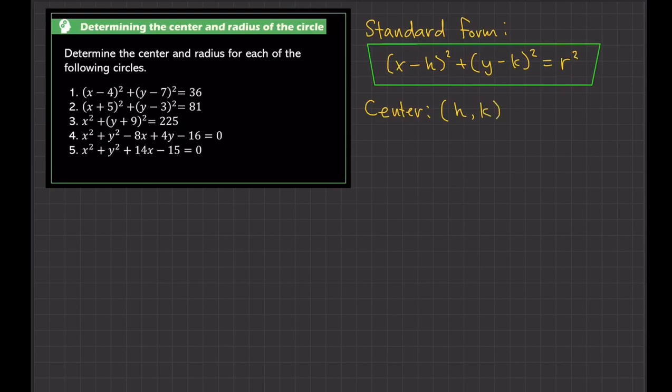So where are we going to find h and k? h is here and k is here. It's important that the signs are all negative. If it's not negative, then we will make it negative. So that's your center — it's already there. Now for the radius, the radius is basically r. So this value right here is our radius. That's how to find the center and the radius.